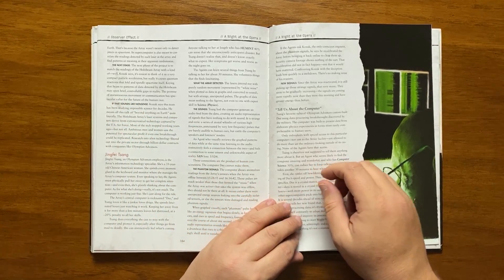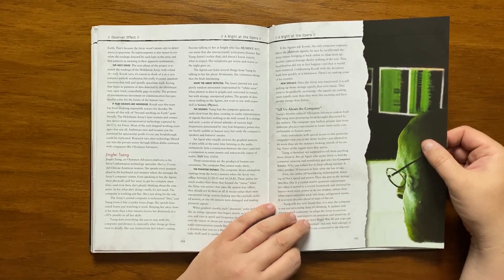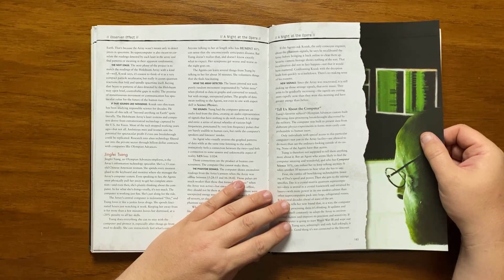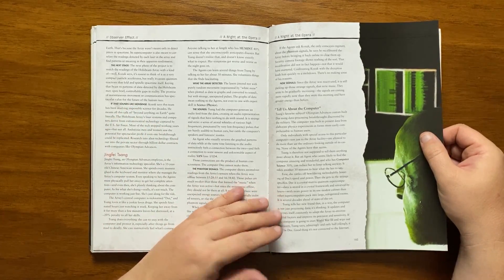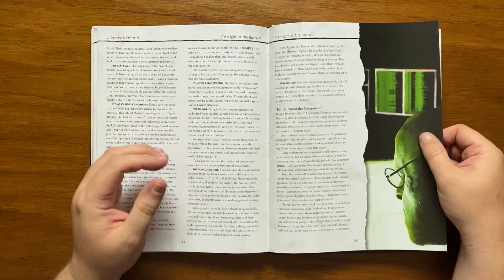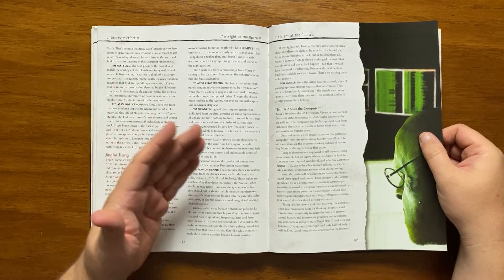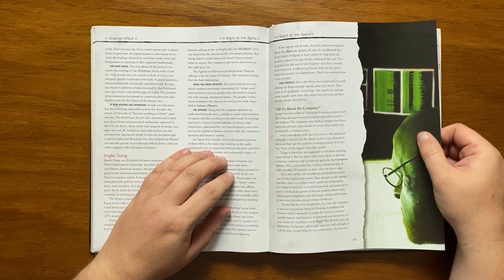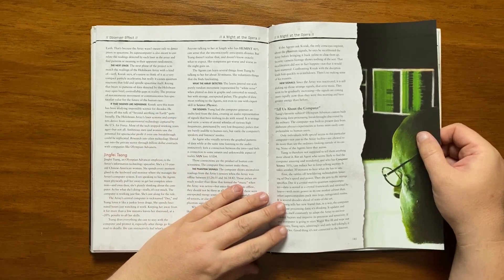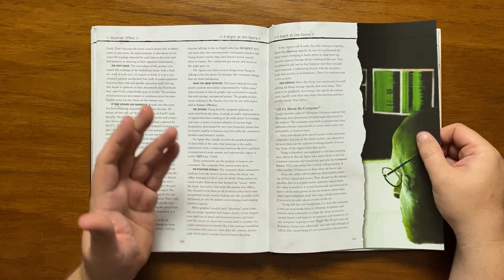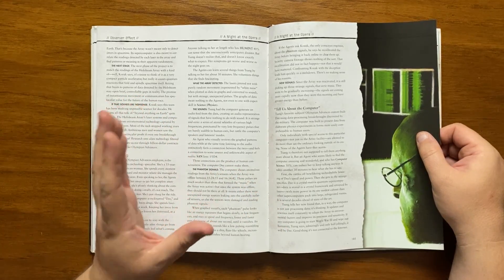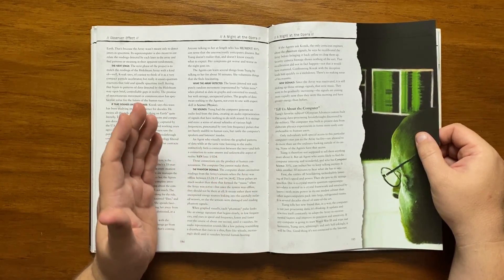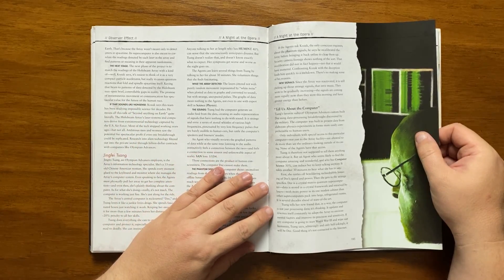The phantom pulses when graphed look like an energy signature which sounds like a drum beat then rises to a thin flute sound then vanishes. Since it was reactivated it is still picking up the strange signals and eerie music and they seem to be gradually increasing. If they ask Sang about D they quickly discover that it is her favourite subject. It was custom built by Olympian advances using breakthroughs discovered by the military. Only individuals with special access get to see inside D's case. If an agent shows interest Sang will take joy in unleashing a fountain of techno babble that boasts of D's speed and power. She tells them that D is a crystal matrix quantum supercomputer with data being stored on a crystal framework and accessed via lasers. It is several decades ahead of the latest state of the art computing currently available.